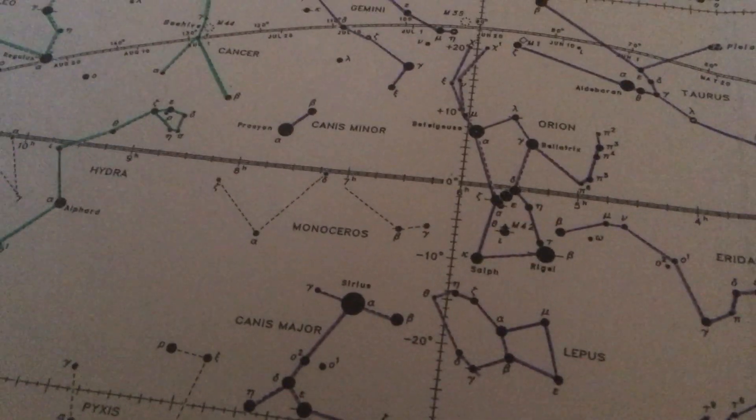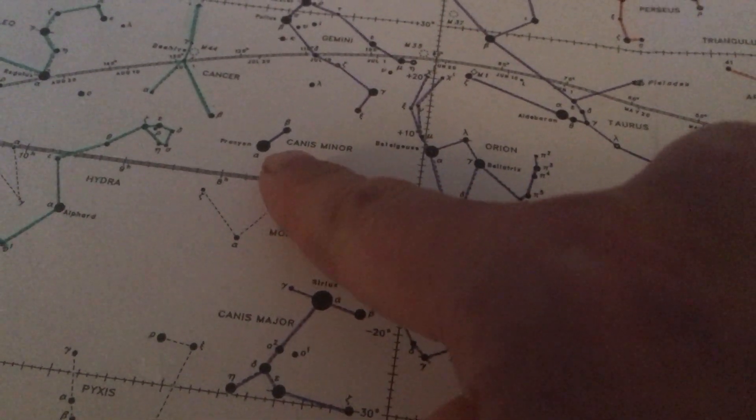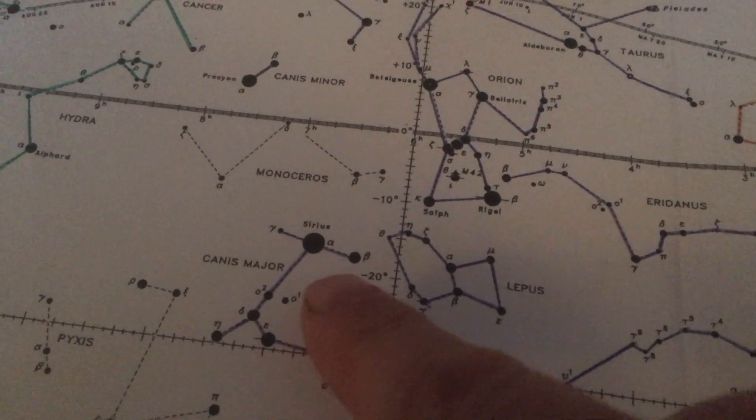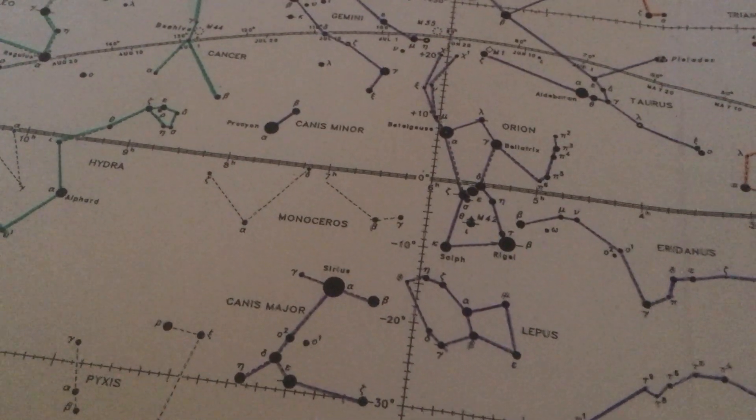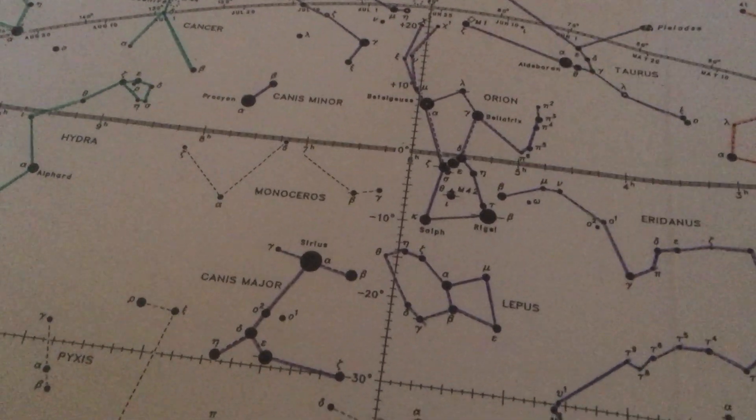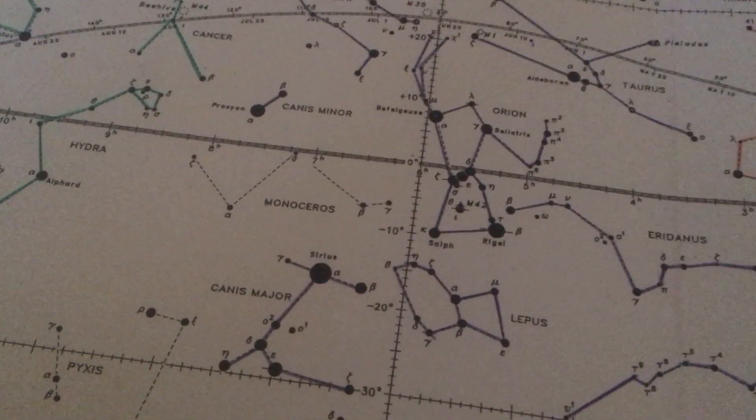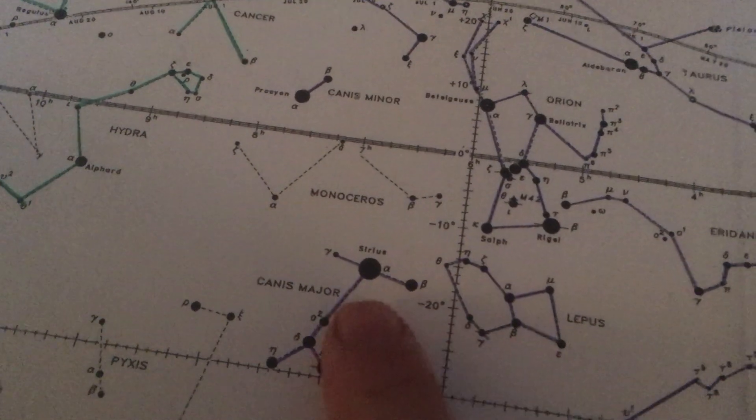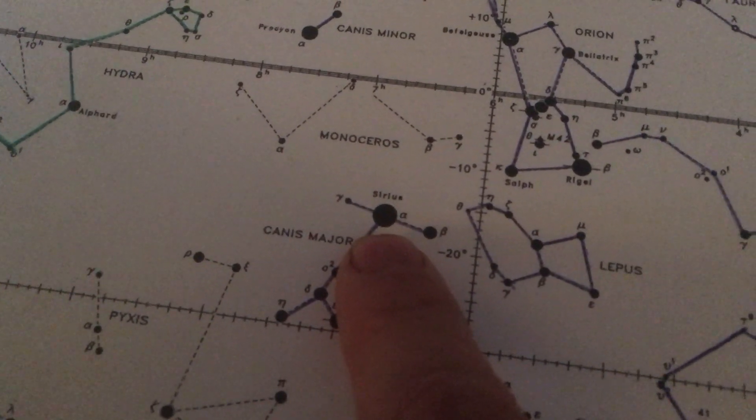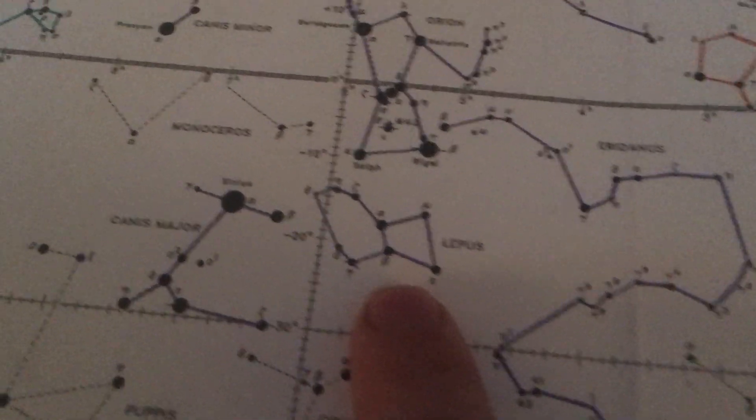Then we have Orion the Hunter's two hunting dogs. We have the little dog, Canis Minor, with the bright star Procyon. And we have the big dog, Canis Major, with the very bright star Sirius. So just like Ursa Major and Ursa Minor were the big and little bears on our north circumpolar sky, Canis Major and Canis Minor are the big and little dogs. Canis in Latin means dog or tooth. And both these dogs are pursuing their prey.